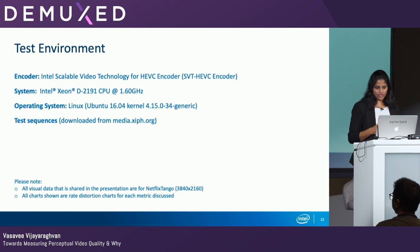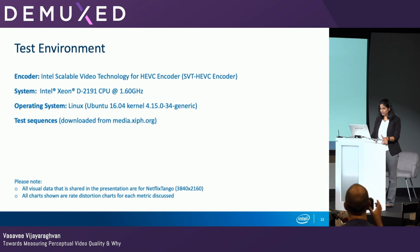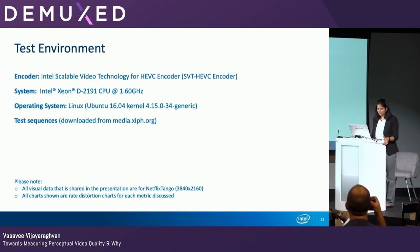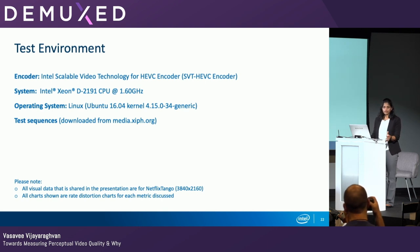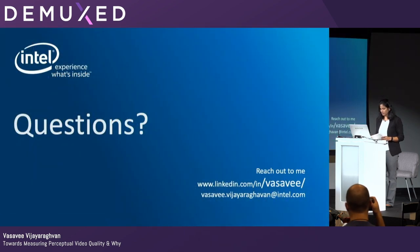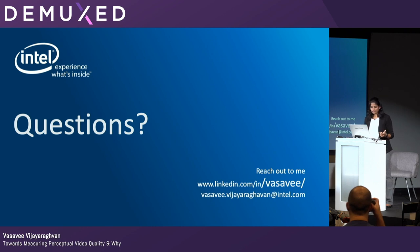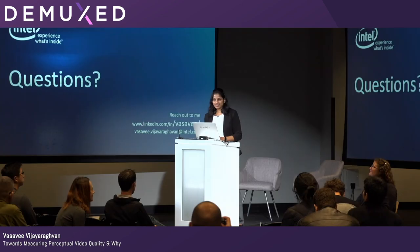The test environment used: the SVT HEVC open source software encoder from Intel for encoding, running on an Intel Xeon D-2191 system with Linux as the operating system. All test sequences shown were downloaded from the openly available media.xiph.org. If you have any questions, feel free to reach out via LinkedIn or my Intel ID. I can take any questions now.